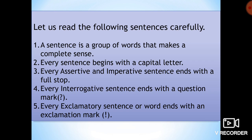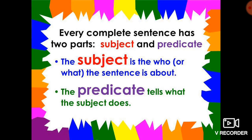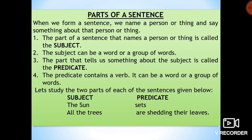Now let's move to parts of sentence. Every complete sentence has two parts: first is subject and second is predicate. The subject is the who or what the sentence is about, and the predicate tells what the subject does. When we form a sentence, we name a person or thing and say something about that person or thing. The part of a sentence that names a person or thing is called the subject. The subject can be a word or a group of words. The part that tells us something about the subject is called the predicate. The predicate contains a verb, and it can be a word or a group of words.